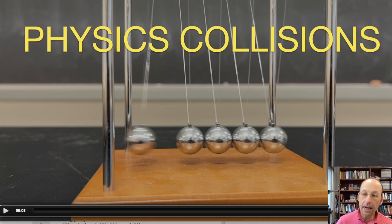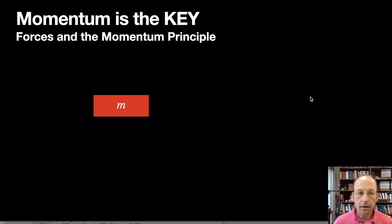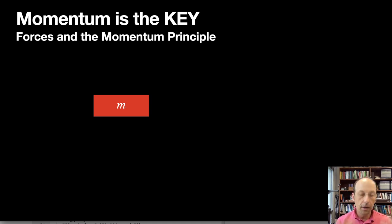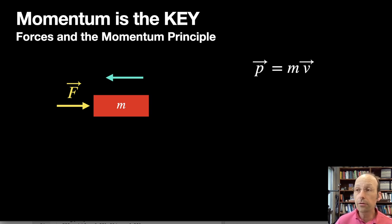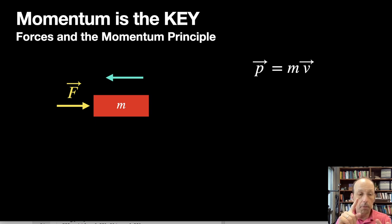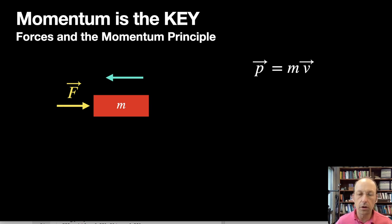When we think about collisions, momentum is the most important thing. Suppose I have a mass moving to the left, and I exert a force on it to the right. How do I describe the motion of this object? The most important thing is the idea of momentum. We define momentum — we use the symbol P — as the product of mass and velocity. Force is a vector, momentum is a vector, and velocity is a vector. We'll limit it to one dimension in a little bit.